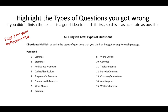On page 2 of your ACT reflection document, I want you to highlight the types of questions you got wrong. If you didn't finish the test, it's a really good idea to finish it first so this is as accurate as possible — try not to look at the right answers. Go through and highlight them. If you didn't answer a question, I recommend finishing the test first and then doing the highlighting.